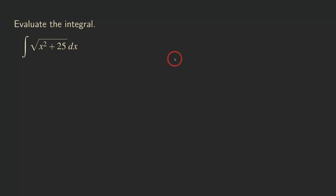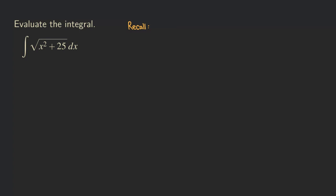How do we use trig sub? Let's recall something first. The thing I'm going to recall is the Pythagorean identity — the tangent and secant version of that. The reason I'm recalling that one is because of the form of the quadratic we have inside the square root. Regarding the Pythagorean identity for tangent and secant: tangent squared theta plus one is equal to secant squared theta.